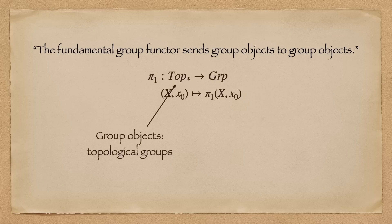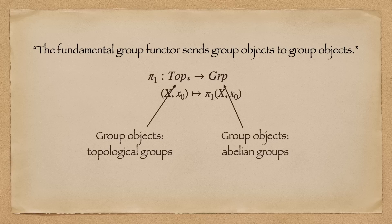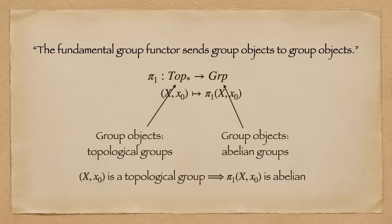The group objects in the category top star, as we discussed before, are topological groups, and the group objects in the category group are precisely the abelian groups. And since functor preserves products, it sends group objects to group objects. Then the fundamental groups of topological groups must also be abelian.